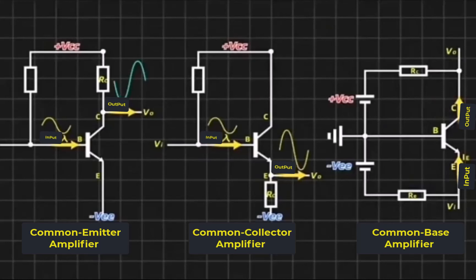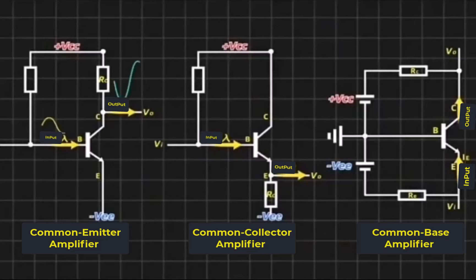The common-emitter and common-collector amplifier circuits amplify voltage in the opposite direction. The common-base circuit amplifies current in the same direction.